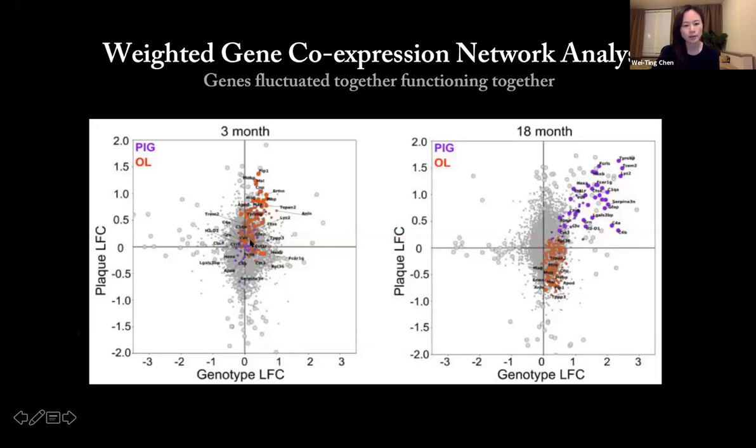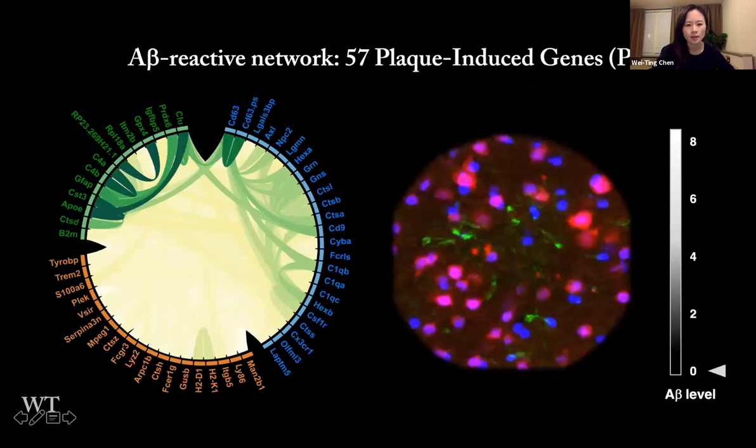The red is the oligodendrocyte network. They are upregulated in the plaque axis at three months, but depleted at eighteen months in these microenvironments. The PIGs is silent at three months, and most components of the PIGs are upregulated in AD, especially in the plaque niche. The green indicates the strength of the connectivity score of gene pairs of the PIGs. The darker color indicates higher co-expression of gene pairs within the selected transcriptomic profile.